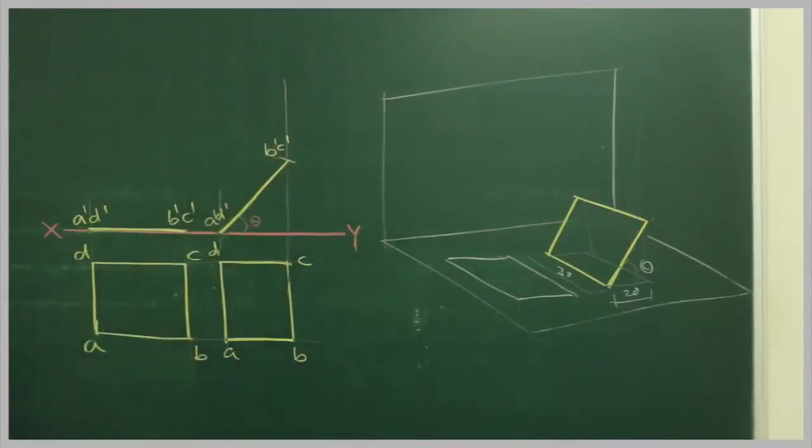So we can find out this angle theta, at which if we incline this plane, from top view you will see the rectangle of side 30 by 20. This is 20 and this is 30.